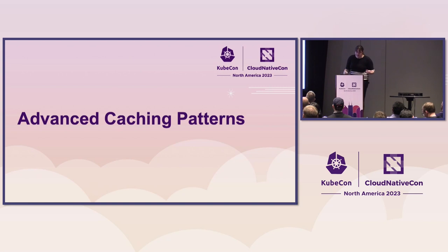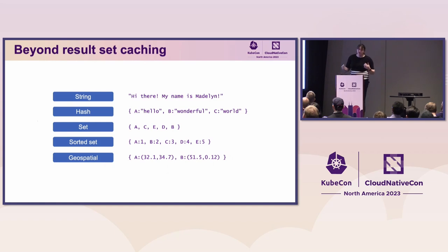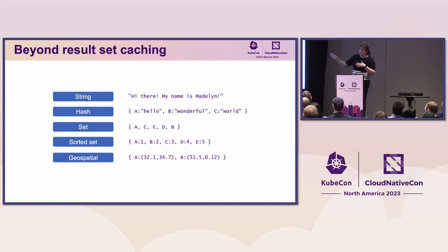If you can do all that, you're doing caching more or less right. But there's nothing too Redis-specific or interesting there. What most people really want is to use all of Redis's advanced data structures. Everything we've talked about so far is just using the string data type — Redis strings are just binary blobs of data. You can stick compressed blobs, JSON blobs, SQL result set blobs — whatever you want. Strings are great for that.